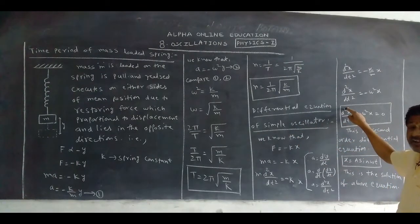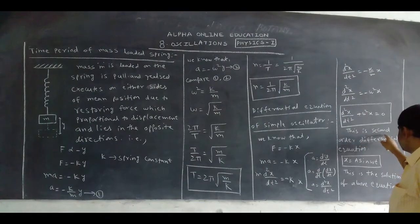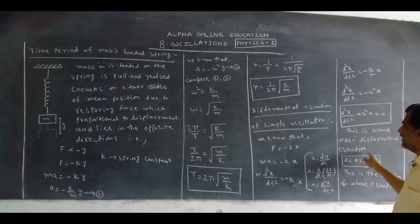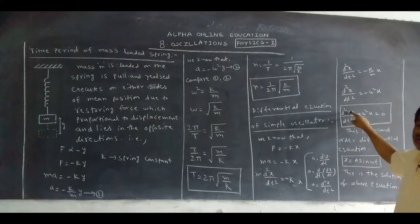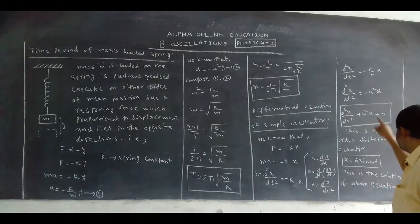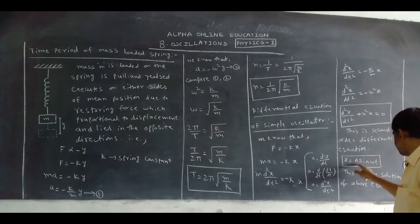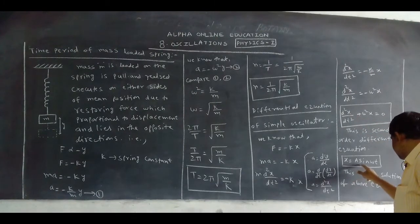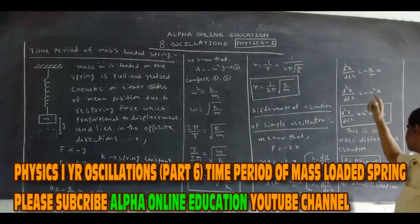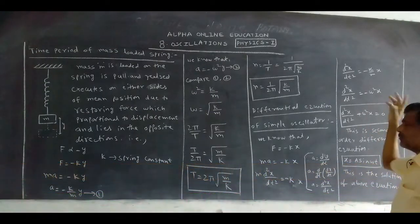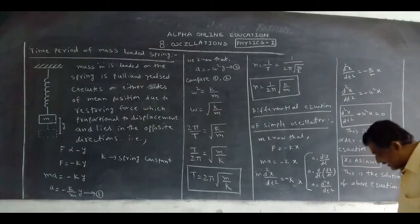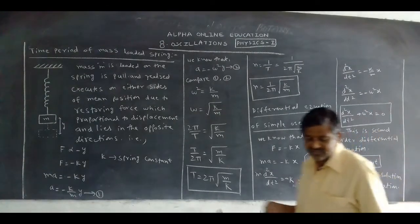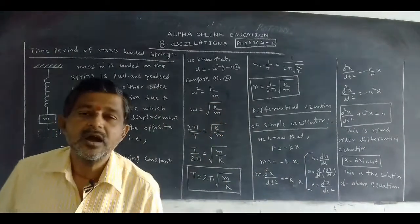The highest derivative is of order 2, which is why this is called a second-order differential equation — and also the differential equation of a simple oscillator. Here X is the variable. If we substitute X = A sin(ωt), we get the answer 0, which satisfies the equation. Therefore X = A sin(ωt) is the solution of this differential equation.